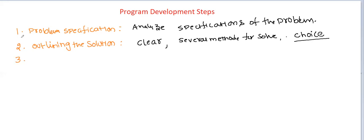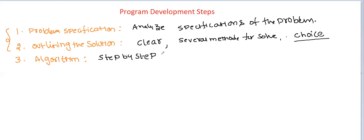The first two steps are clearly: understanding of the problem and understanding of the solution. Now we move to the first step, which is algorithm. Once you understand the problem, we have to design an algorithm — the step-by-step process for solving the problem is called algorithm.